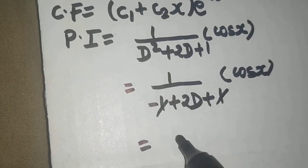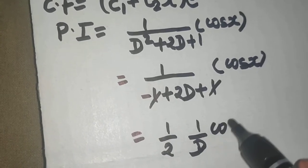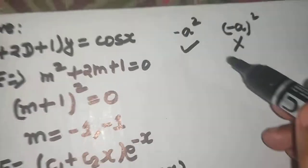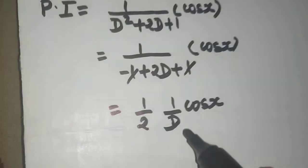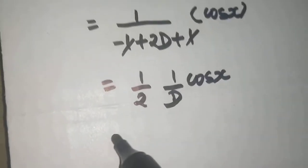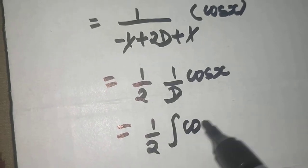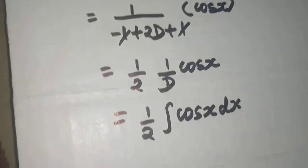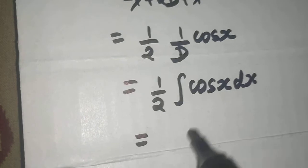So we are left with 1 upon 2 and 1 upon d operating on cos x. Now you all know that 1 upon d is similar to integral and because it is cos x, so it will integrate with respect to x. So 1 upon d integral of cos x. Now remember integration of cos x is plus sin x. Only derivative is minus but integration is plus. So 1 by 2 sin x.